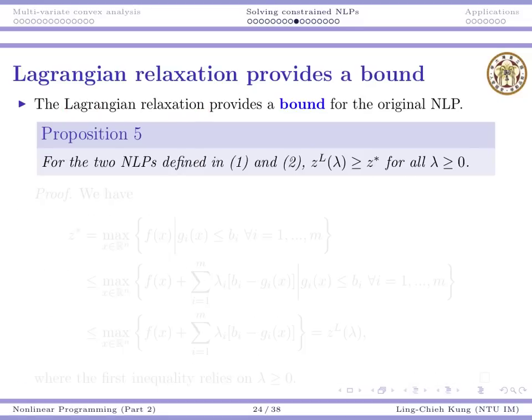Let's see it. The answer is yes. Lagrangian relaxation always provides a bound for the original nonlinear program. In particular, for the two nonlinear programs defined in equation one and equation two, the relaxation always gives an upper bound. For maximization problem, we give an upper bound. For minimization problems, we give a lower bound.